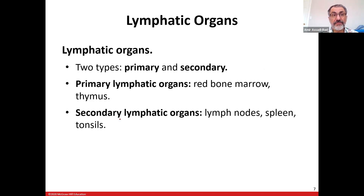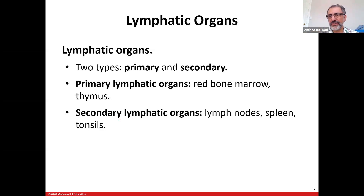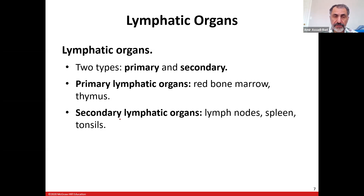Primary and secondary lymphatic organs — there are two types. The primary ones are red bone marrow and thymus. The thymus is right here. As you age, the size of the thymus gland shrinks and shrinks. When you're younger it's bigger, but around age 25 to 30 it starts shrinking. That's why older people are more susceptible to diseases — they have a weaker immune system because of the size of the thymus gland.